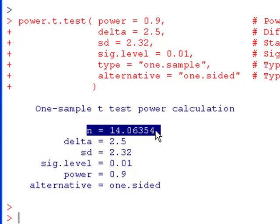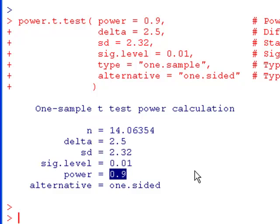So in our case, you would need to get a sample size of 15 in order to make sure that you hit a power of 0.9 or higher. So just keep that in mind. You always round it up.